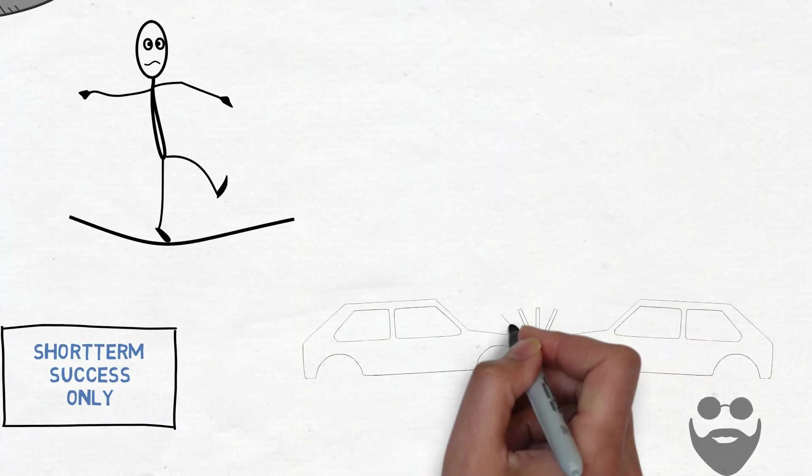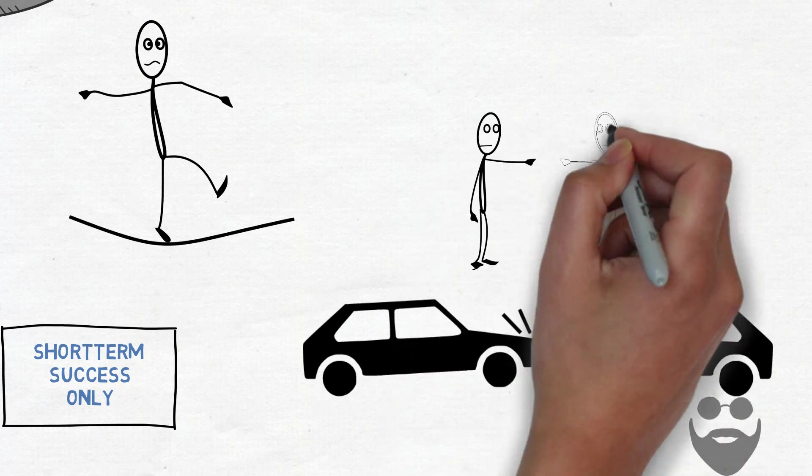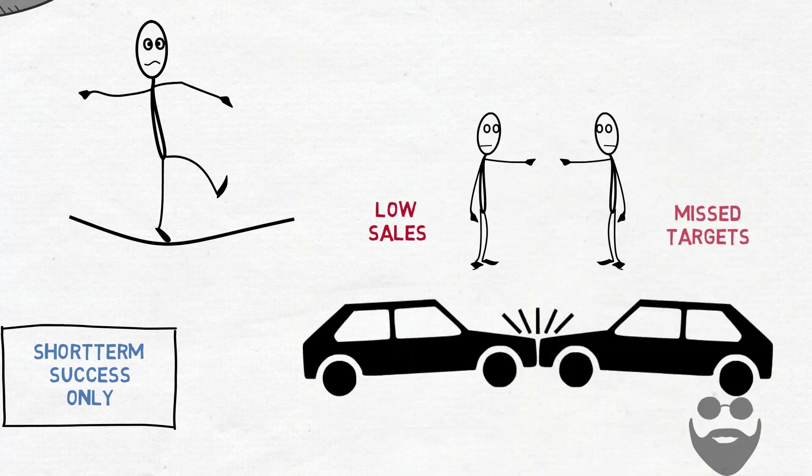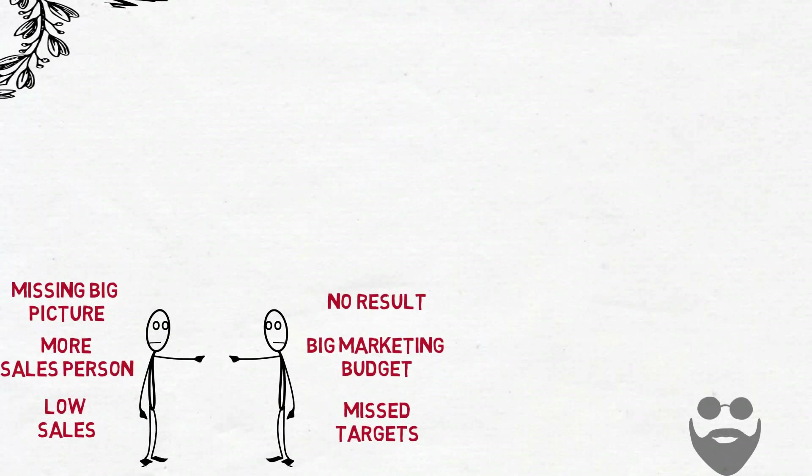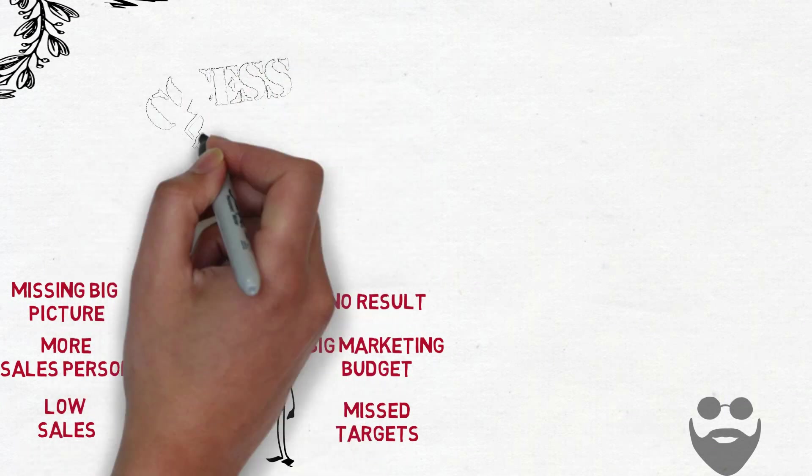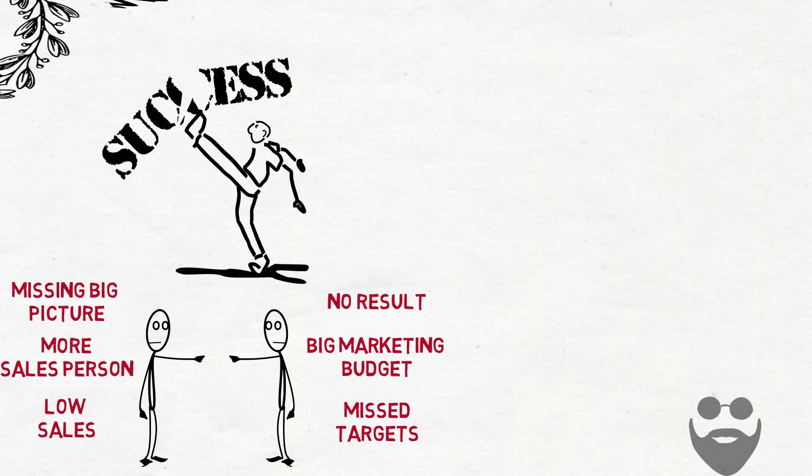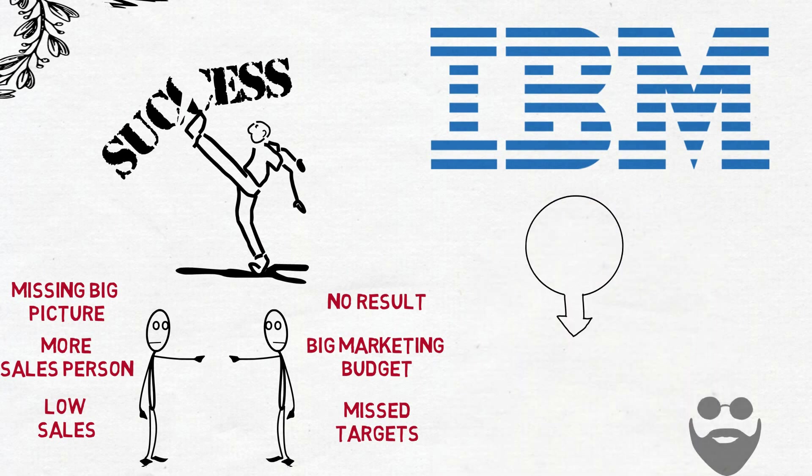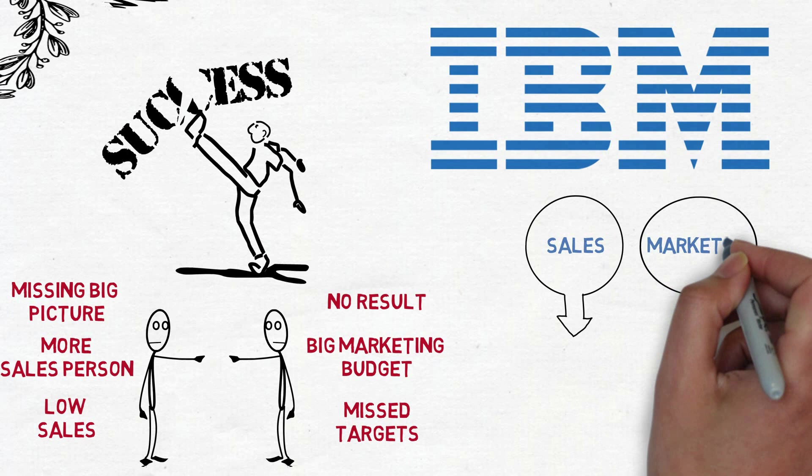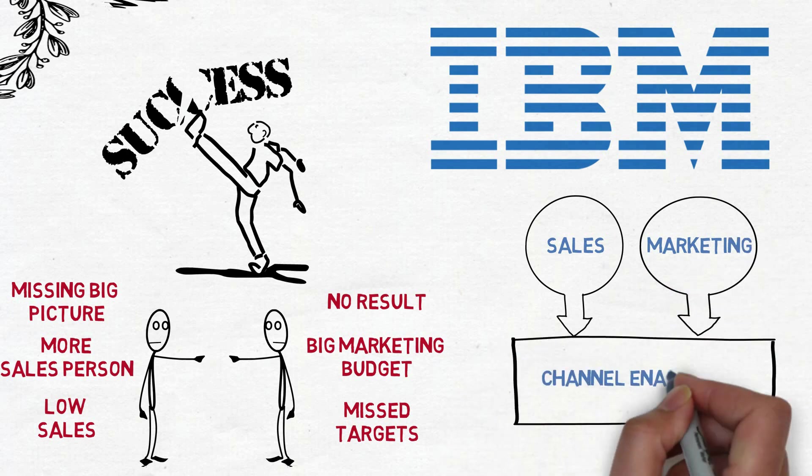One of the worst things for a business is when sales and marketing clash. They start pointing fingers at each other for low sales or missed targets. Sales teams accuse marketing of using too much budget without results and want more salespeople. Marketing teams accuse sales of being short-sighted and missing the big picture. That's exactly what was going on at IBM, right before their management merged their sales and marketing teams into a new division called channel enablement. It yielded positive results like shorter sales cycles and lower cost per sale.